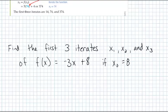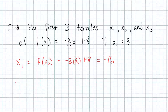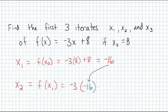So if we wanted to find the first three iterates for f of x equals negative 3x plus 8, we know x sub 1 is going to be f of x sub 0, which really means we're going to plug in x sub 0 is 8, so negative 3 times 8 plus 8, and we're going to get negative 16. Now we're going to take that negative 16 and use that in our x sub 2 value. It's going to be f of x sub 1, and when we use x sub 1, we're going to take negative 16 and plug it in. So multiply it by negative 3 and add 8, and we're going to get 56.